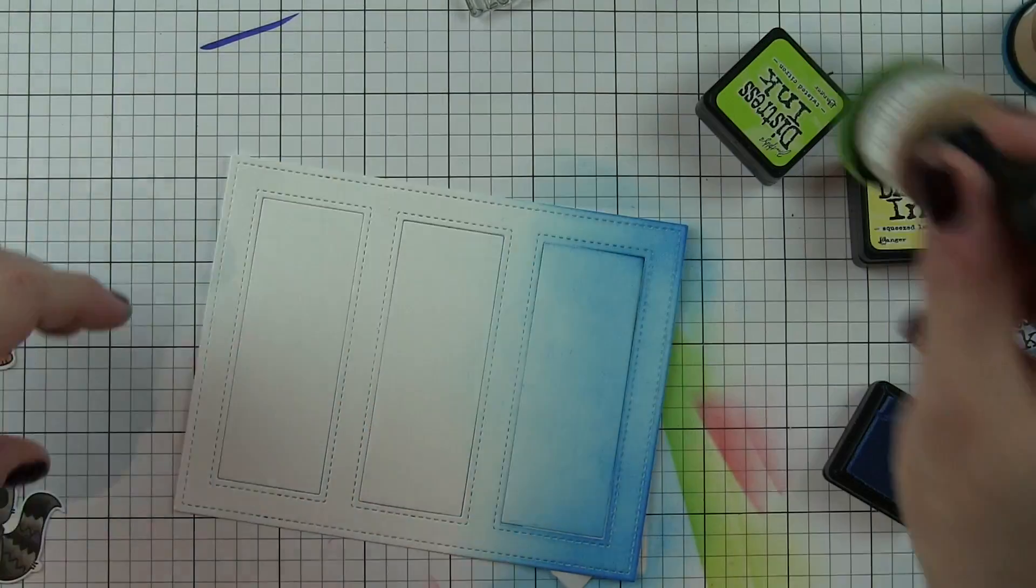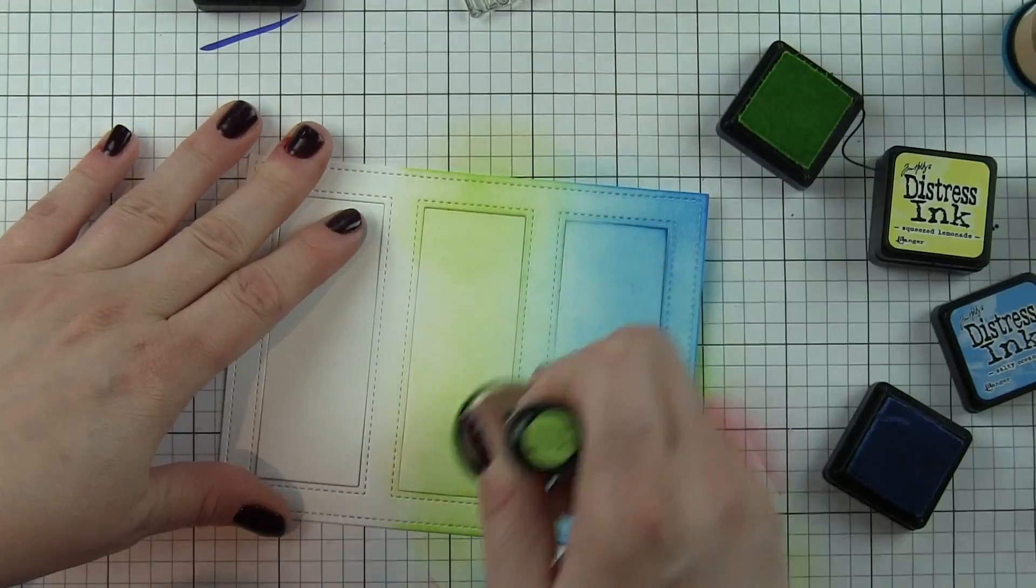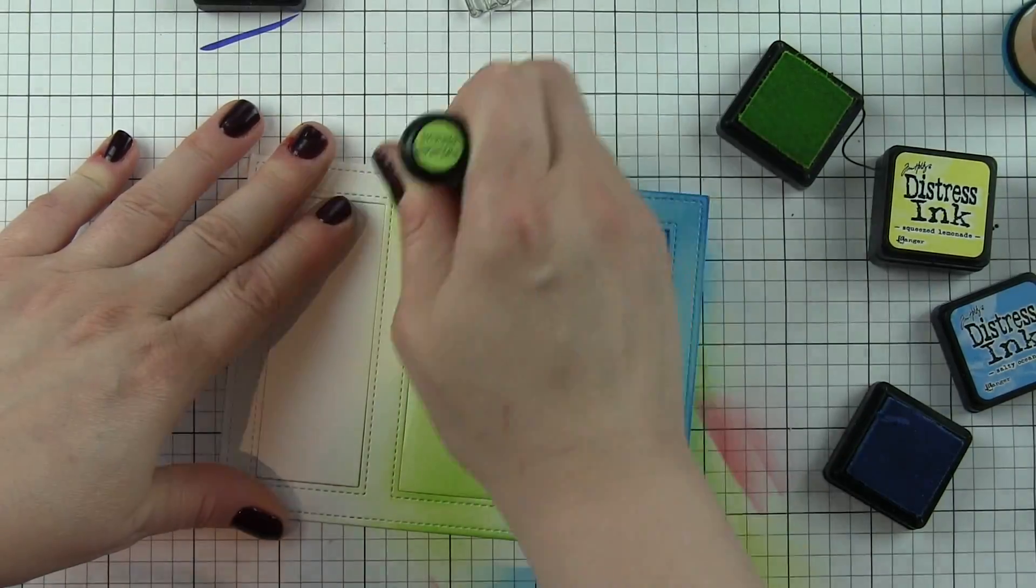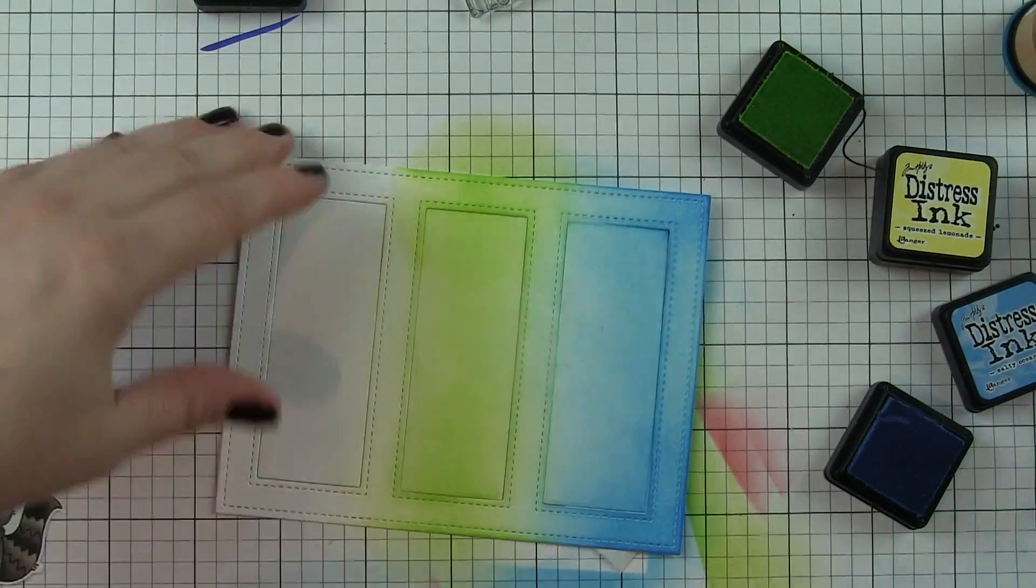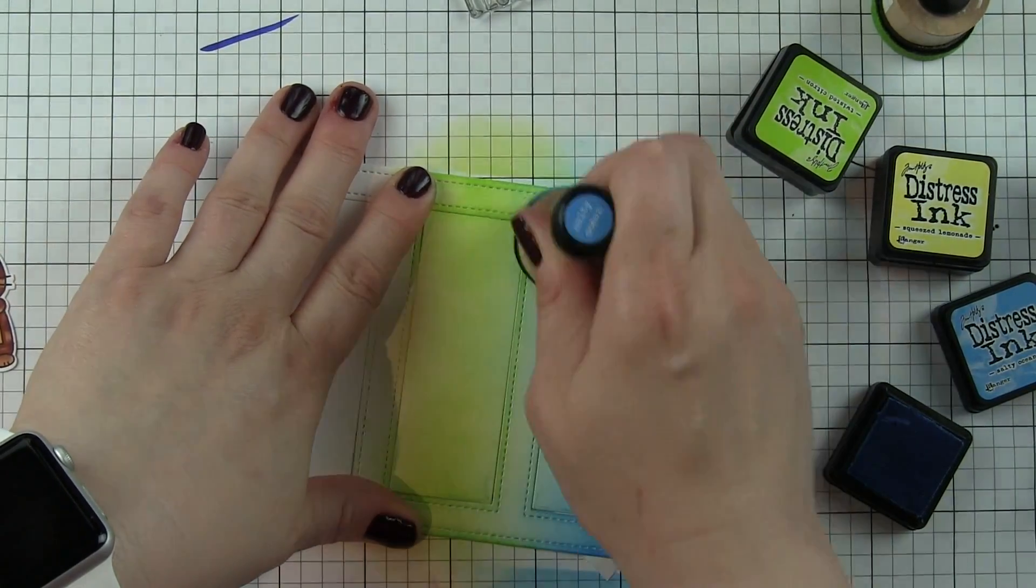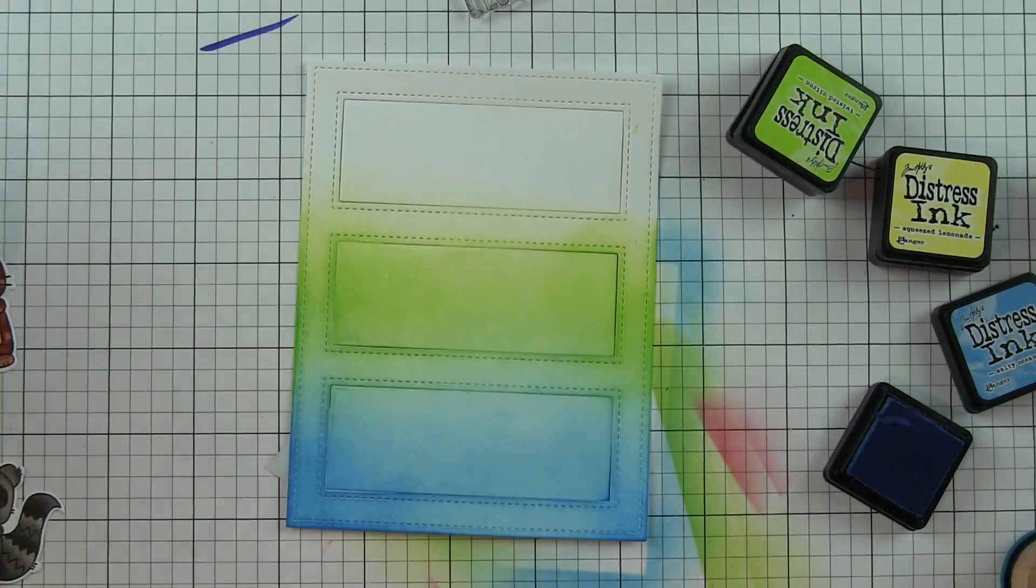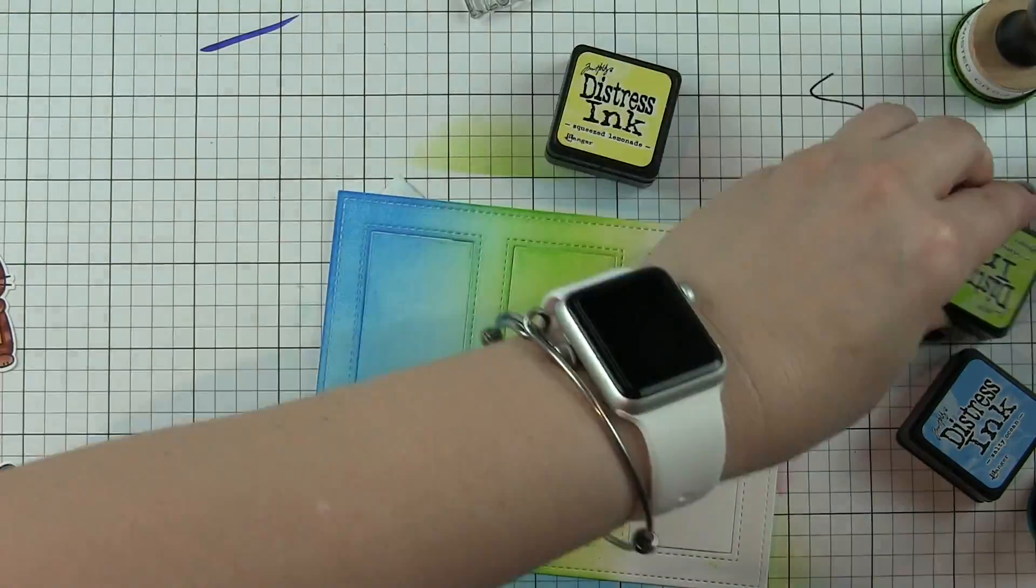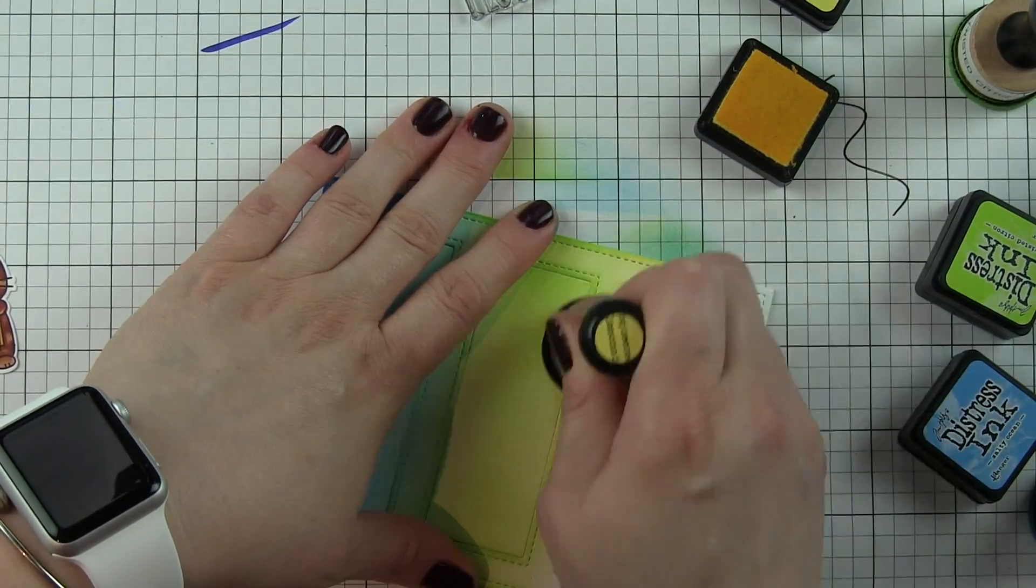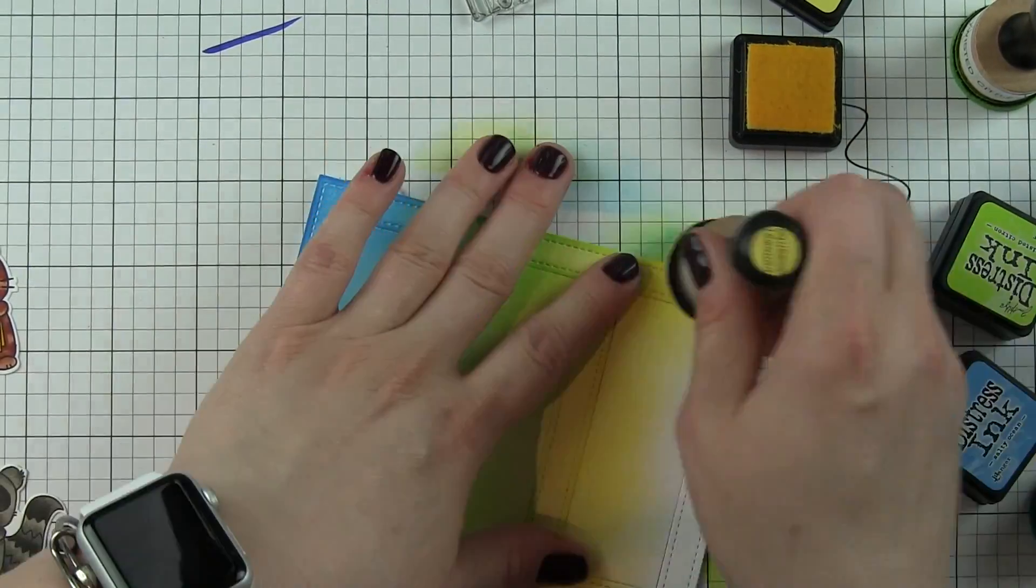I use post-it tape to hold together those inside panels with the frame. I'm starting with salty ocean distress ink along the bottom edge, I'll blend in twisted citron next, and then squeezed lemonade is going to round that out at the top. I want to blend and blend, go back to my blue, blend the blue into the green so you get that beautiful seamless transition from one color to the other.